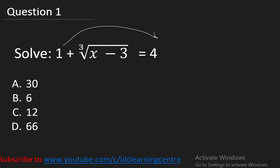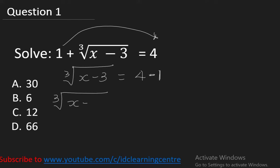Move the 1 to the right. We have cube root of (x minus 3) equal to 4 minus 1, which is 3. The next thing we need to do is get rid of the cube root on the left hand side, because we are solving to get the value of x. To do that, we take the cube of both the left hand side and the right hand side.